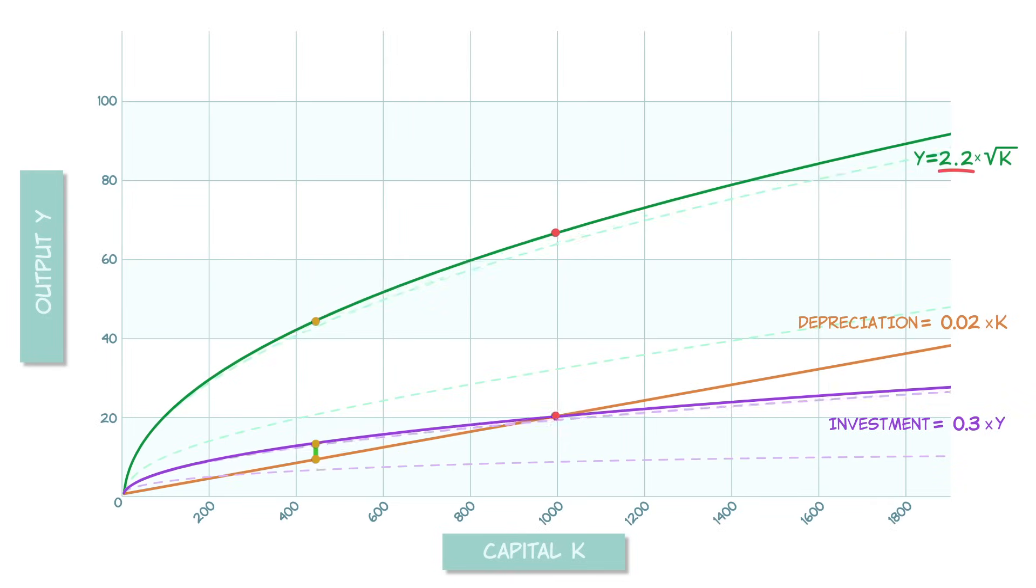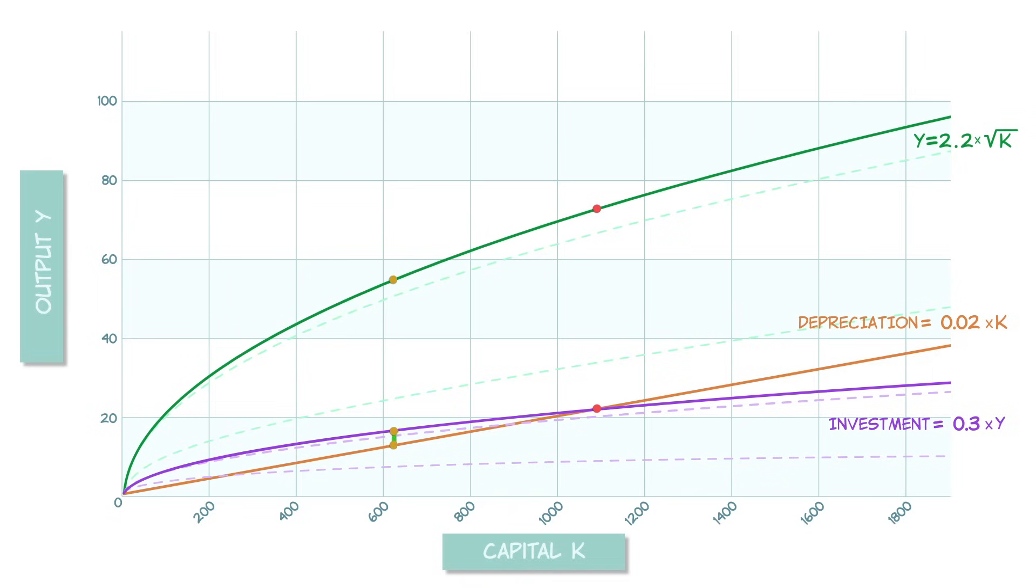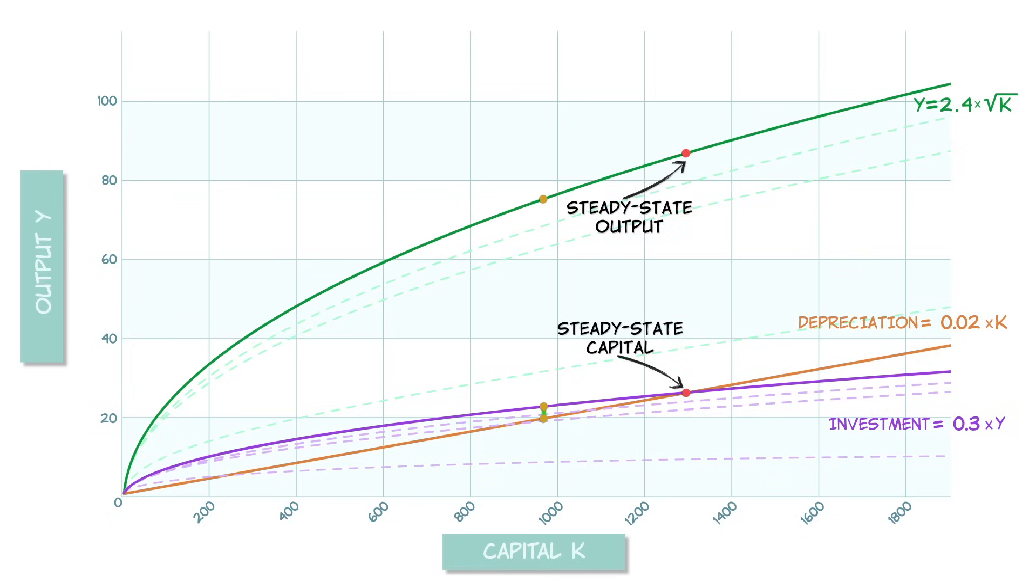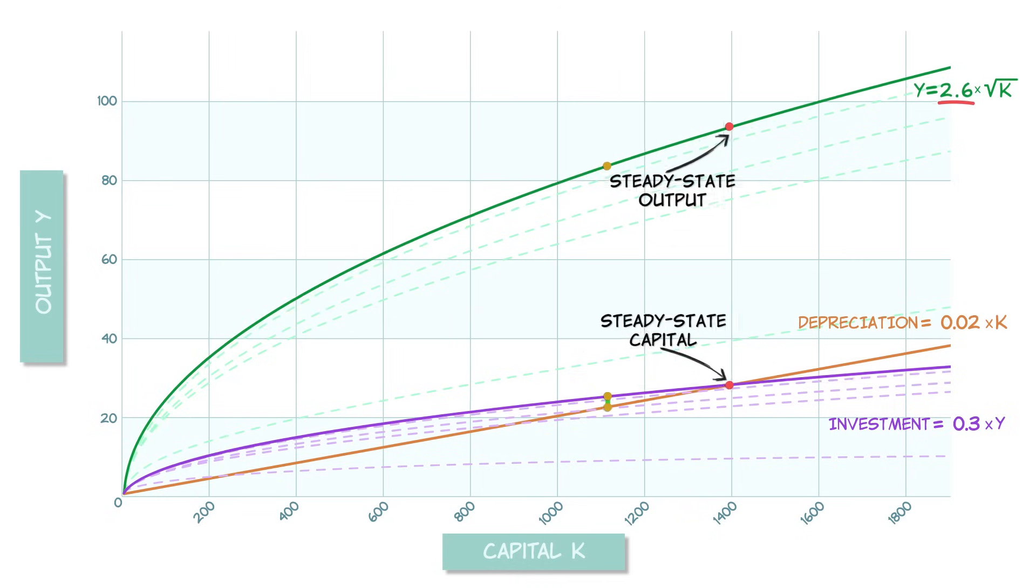Now imagine that ideas are constantly improving. You'd have continual shifts upward of the output curve, and that means continual shifts upward of the investment curve. We'd always stay to the left of the steady state, and there we'd continually grow.